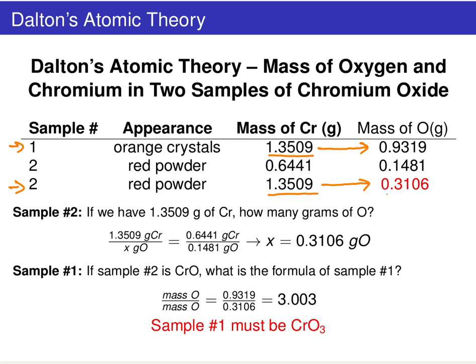If we look at the ratio of sample one over sample two — in this case 0.93 over 0.31 — we carry out that division and find a ratio of approximately three. Remember, this is actual experimental data so nothing's going to be exact.